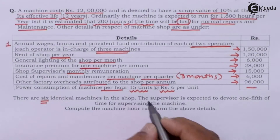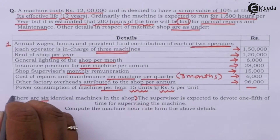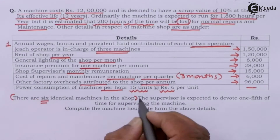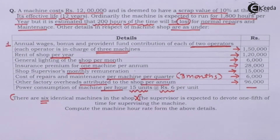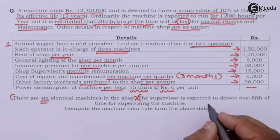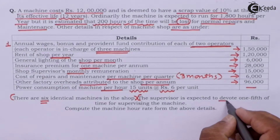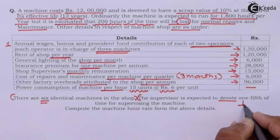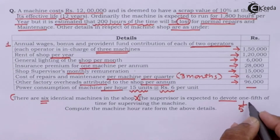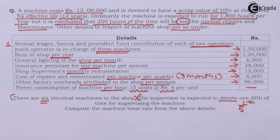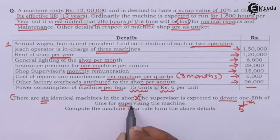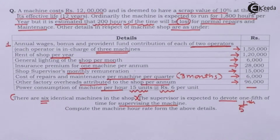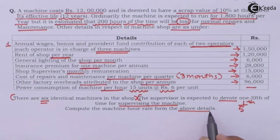The supervisor is expected to devote one-fifth of the time for supervising the machines. Compute the machine hour rate from the above details.